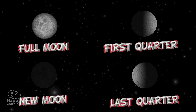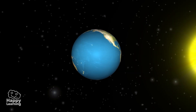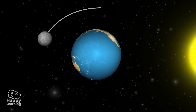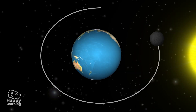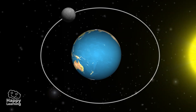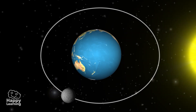The Moon phases are produced by two reasons: the movement of the Moon around the Earth, and because the Moon reflects light from the Sun like a mirror.